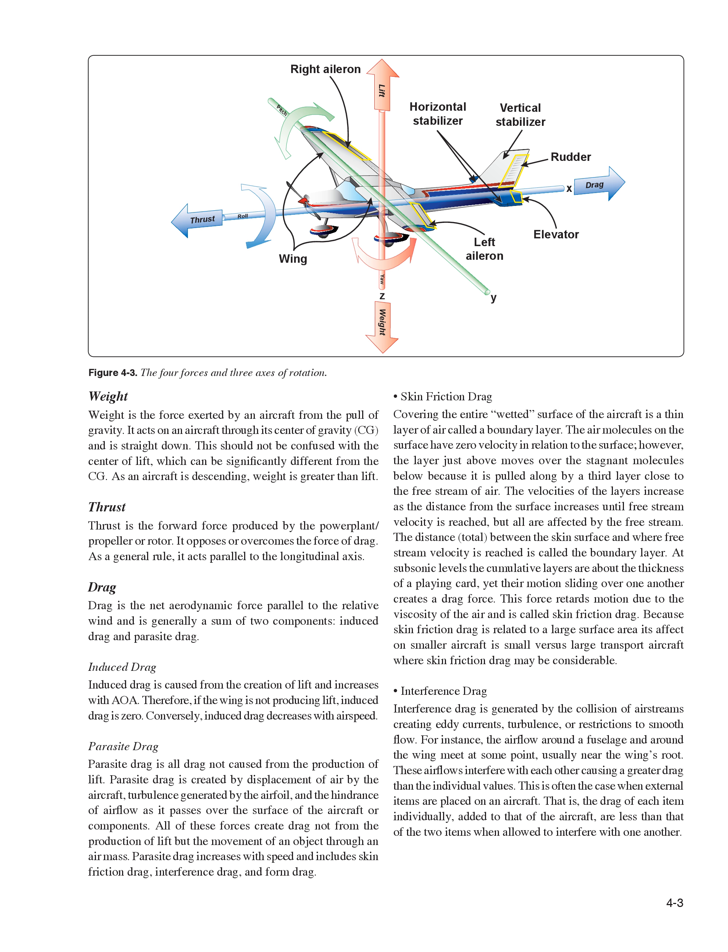Skin Friction Drag. Covering the entire wetted surface of the aircraft is a thin layer of air called a boundary layer. The air molecules on the surface have zero velocity in relation to the surface; however, the layer just above moves over the stagnant molecules below. Velocities of the layers increase as the distance from the surface increases until free stream velocity is reached. The distance between the skin surface and where free stream velocity is reached is called the boundary layer. At subsonic levels, the cumulative layers are about the thickness of a playing card, yet their motion sliding over one another creates a drag force called skin friction drag. Because skin friction drag is related to a large surface area, its effect on smaller aircraft is small versus large transport aircraft where it may be considerable.